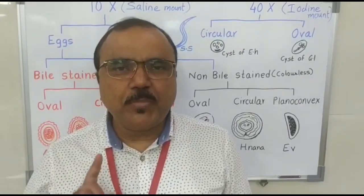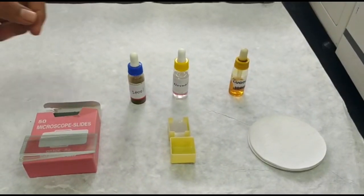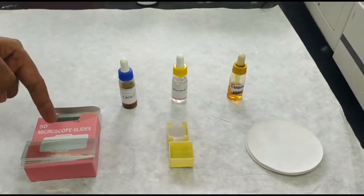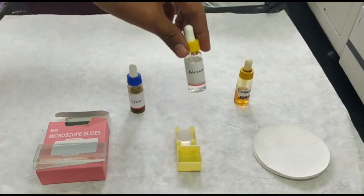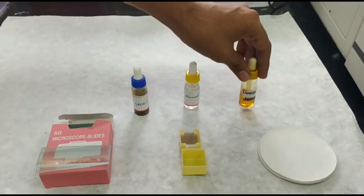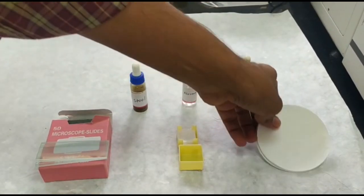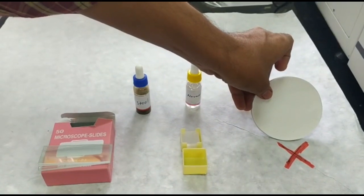Let us learn how to prepare saline mount. Generally you will be provided with stool specimen, slides, cover slip, normal saline, Lugol's iodine, and filter paper. Do not use filter paper at any time. Why? We will tell you later.